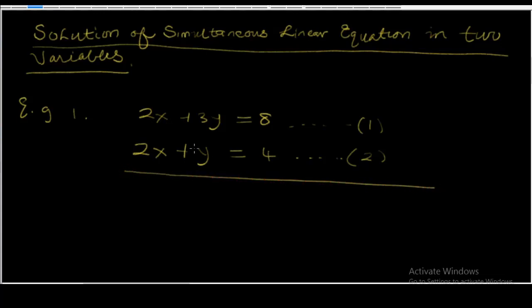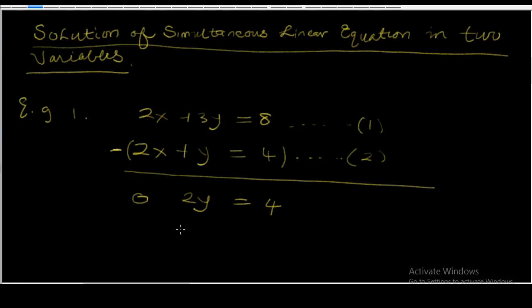Let's subtract equation 2 from equation 1 — we place a minus sign here, which applies to all elements in that equation. So 2x minus 2x is equal to 0. Then 3y minus y is equal to 2y. And 8 minus 4 is equal to 4. So 2y equals 4, and dividing both sides by 2, y is equal to 2.